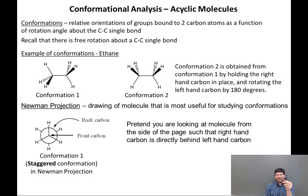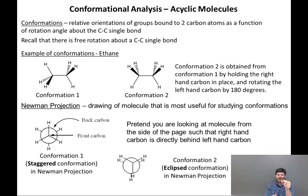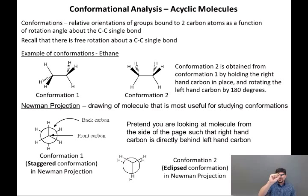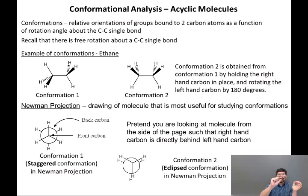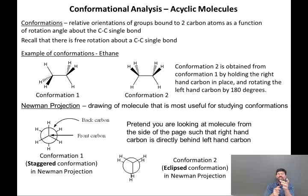The other conformation, conformation two, would have a Newman projection where I hold the front carbon and rotate it 180 degrees to get to conformation two. Because the hydrogens are on top of each other as I look at the molecule from front to back, this conformation is called the eclipsed conformation — similar to a solar eclipse, where the moon comes between the earth and the sun. The bonds between the carbons and the hydrogens are completely lined up.